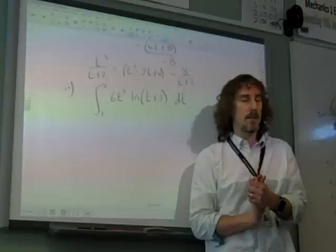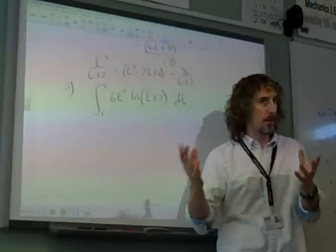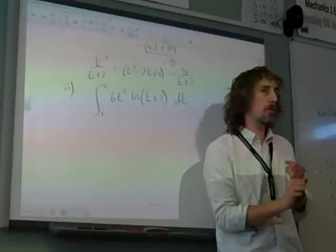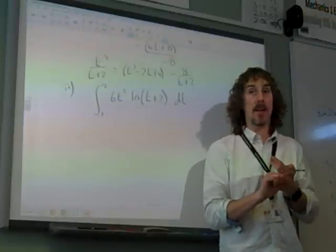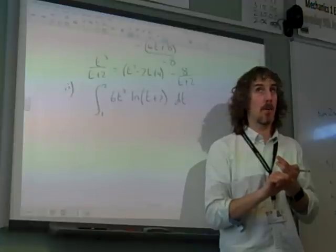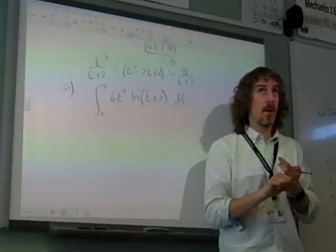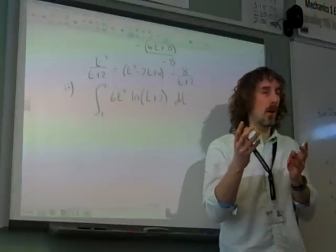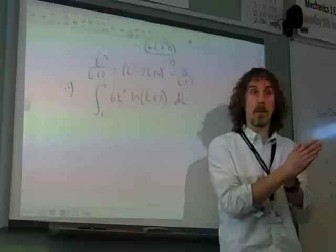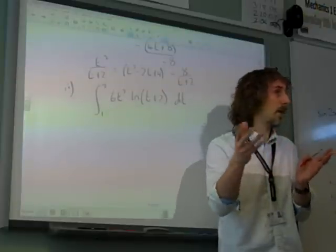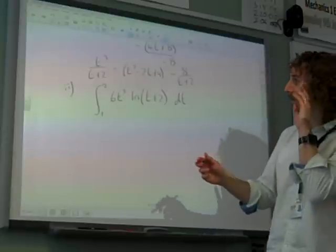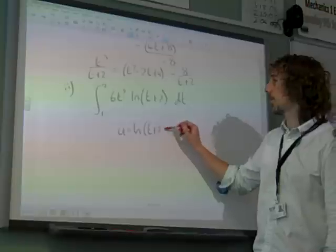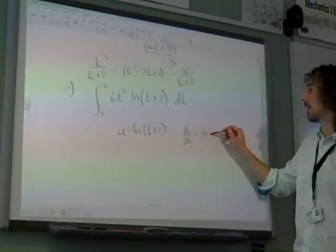So, we need to split this up as a u and dv by dx thing. We want the u to be something that can differentiate and preferably gets better. And the dv by dx to be something that we can integrate. And hopefully it doesn't get much worse. But natural log provides its own little problem with this, doesn't it? Because natural log has always got to be the thing that you differentiate. Do you remember that? Because the way of integrating natural log is to use integration by parts. Differentiate it first.